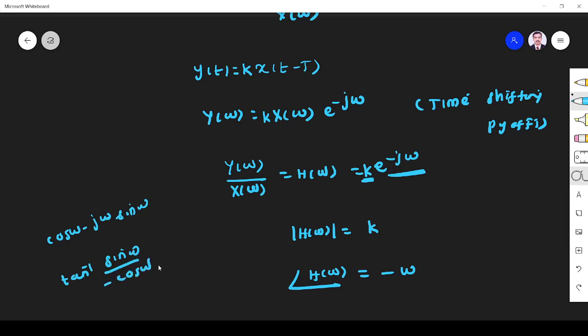So tan inverse gives -ωT. From this, what I understand about the channel: